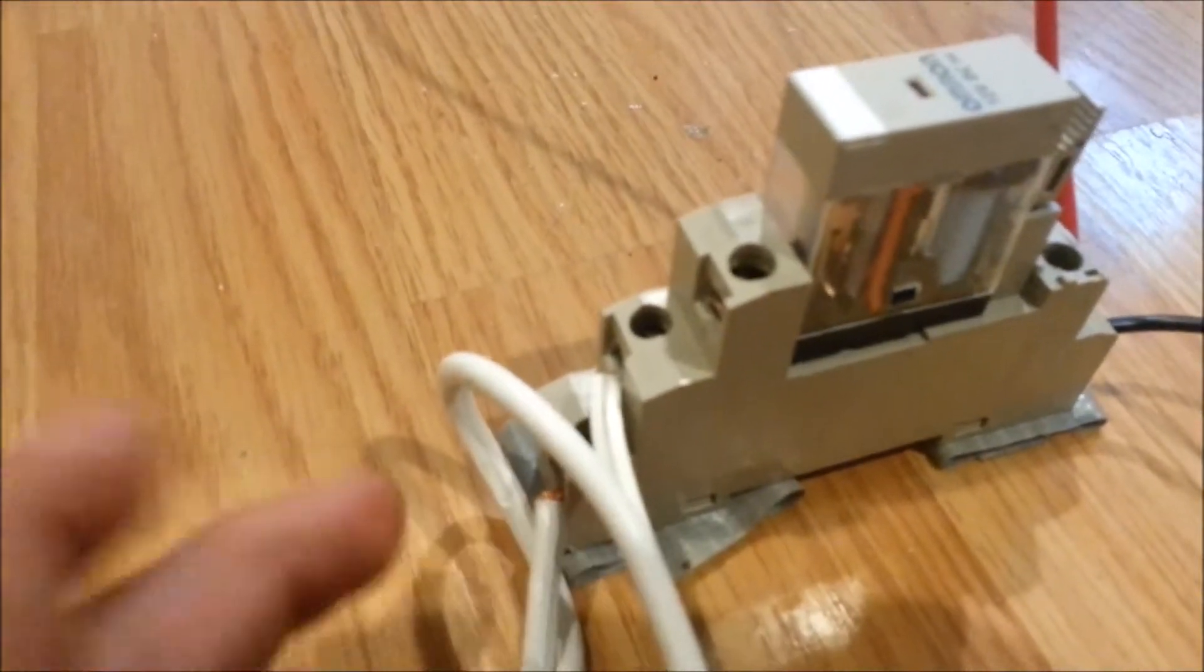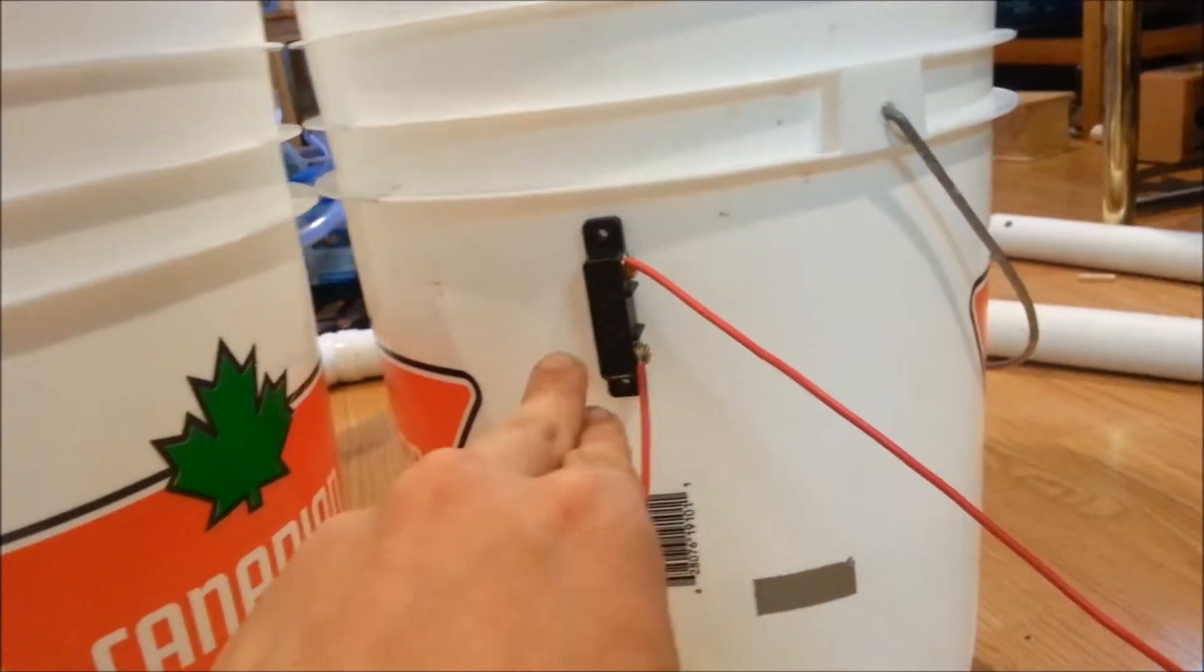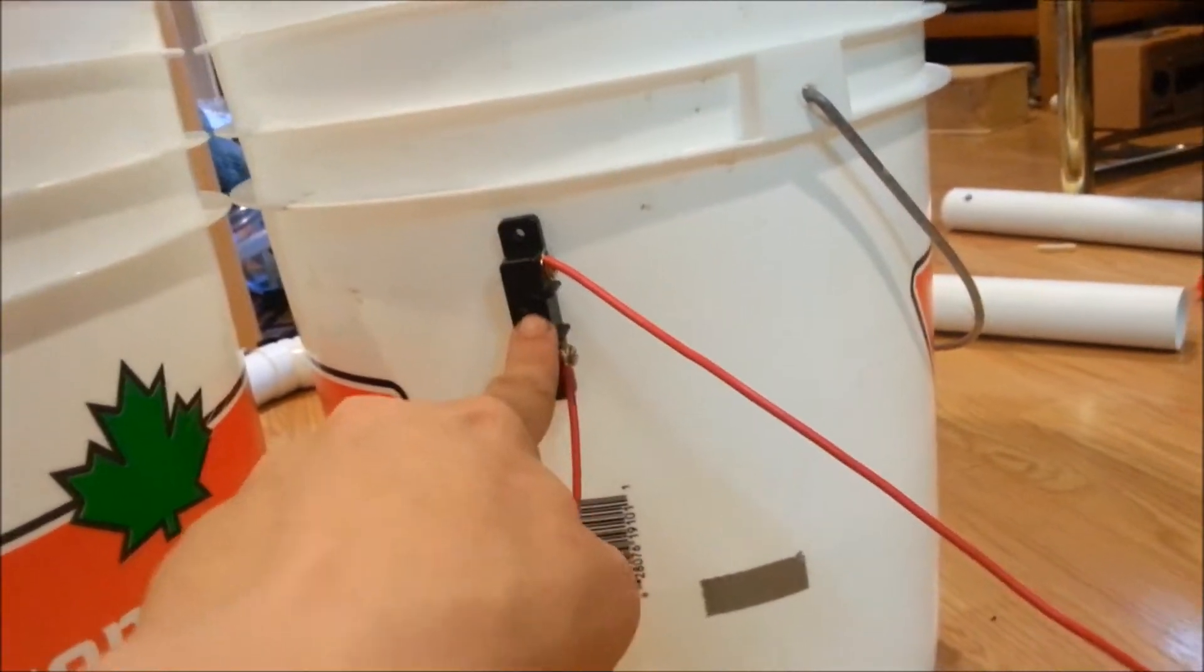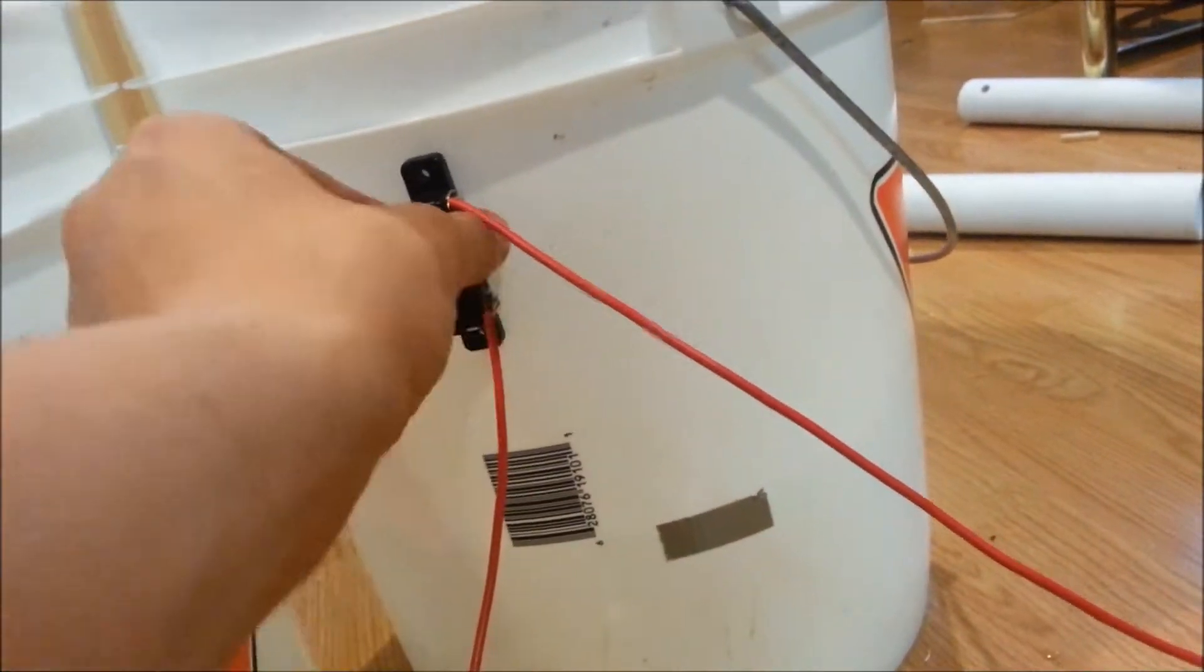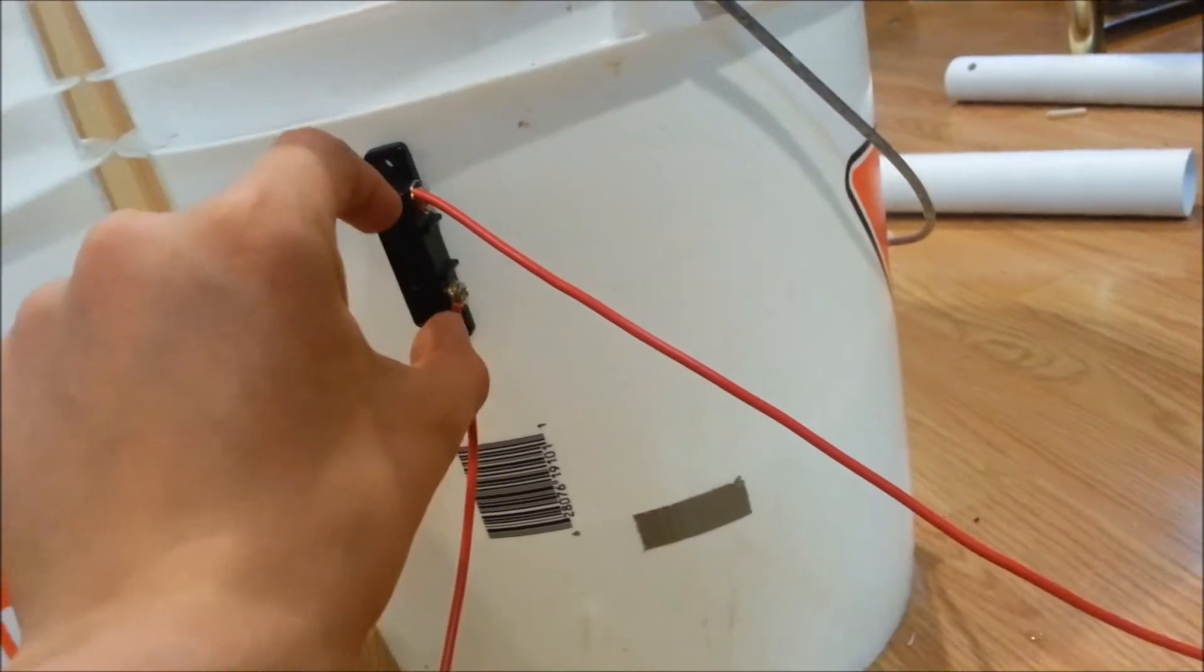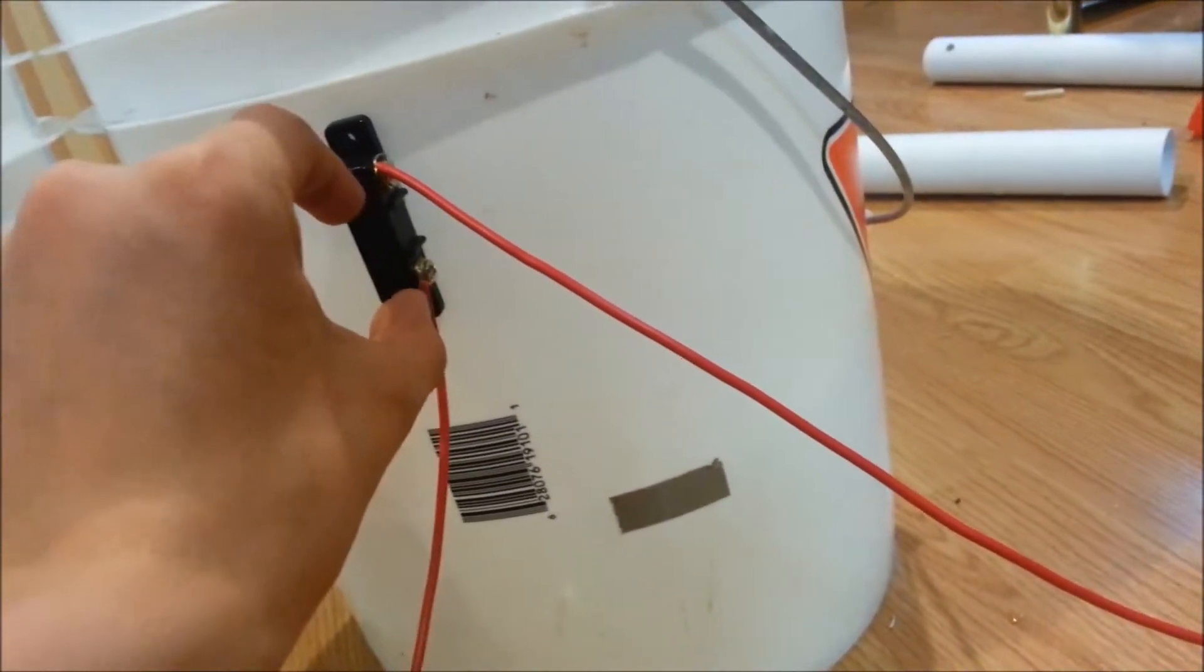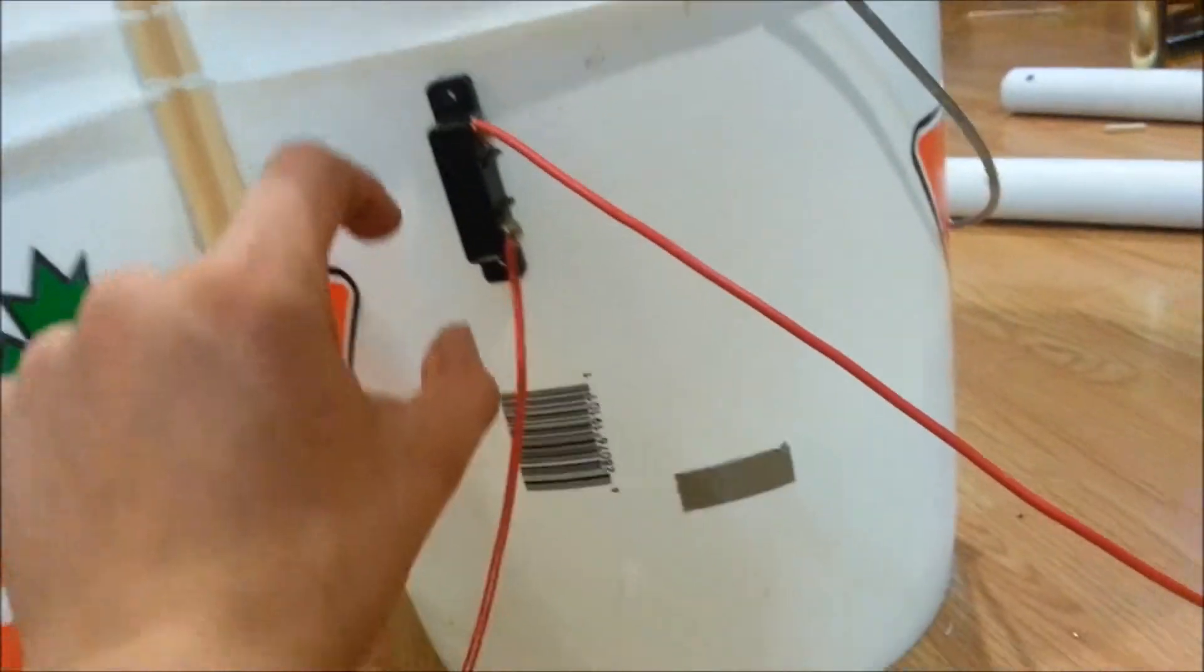If you have it at number three, it'll always be off unless it gets to here. When the float switch is here and it goes here, it'll shut off the pump. But if it's down here, it would turn on the pump.